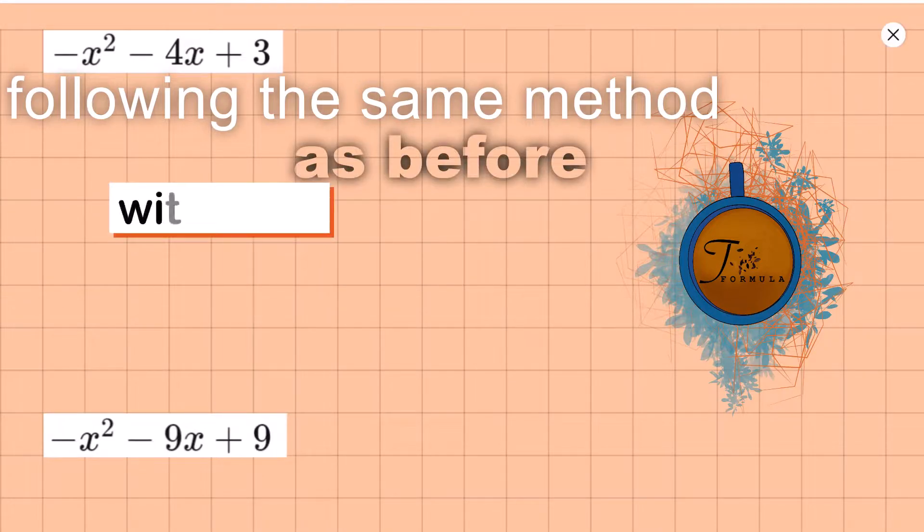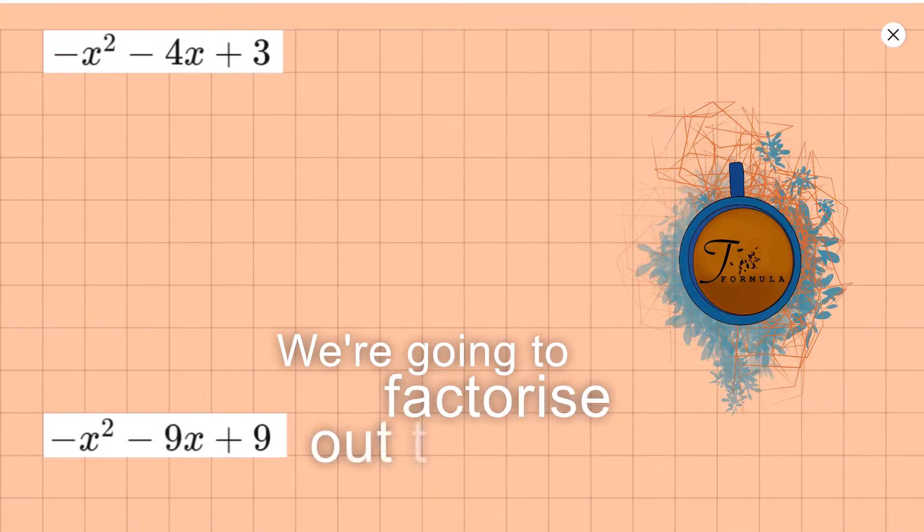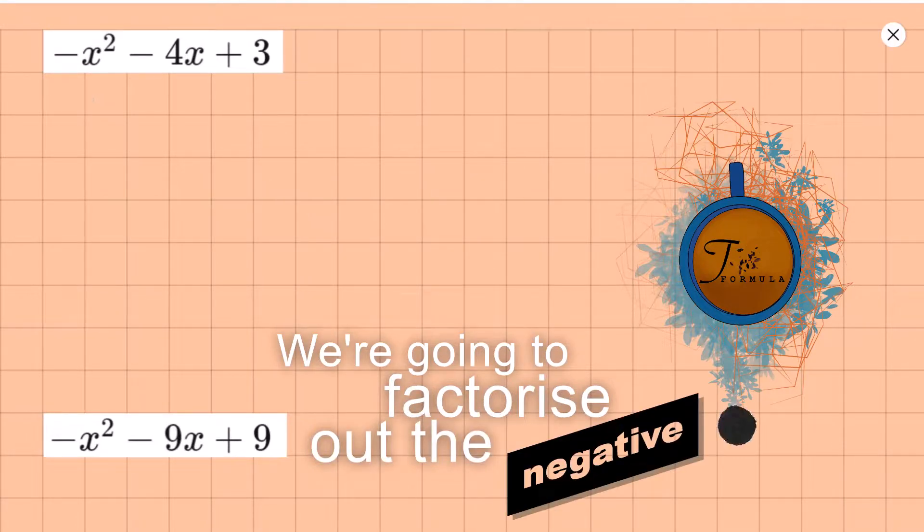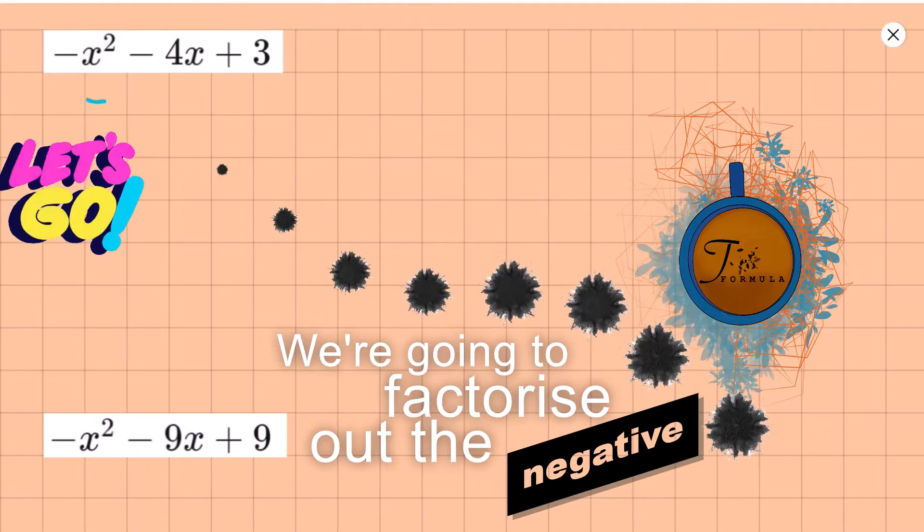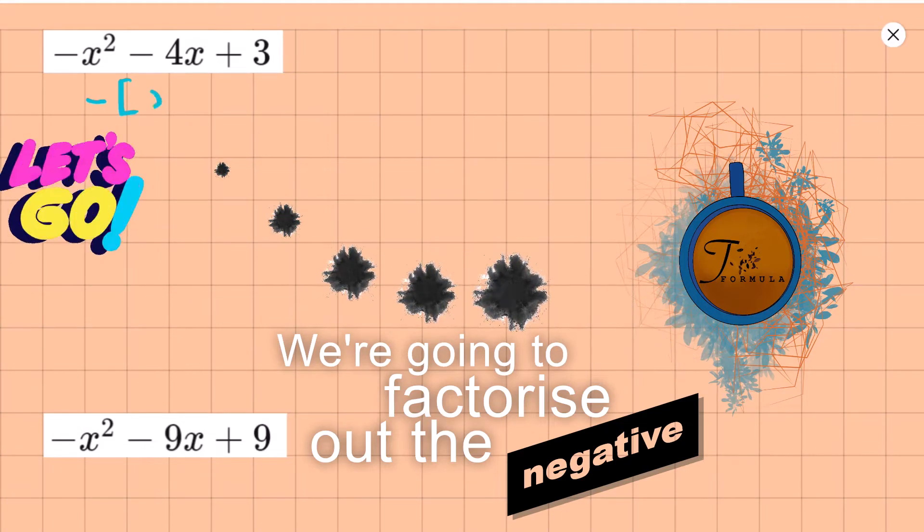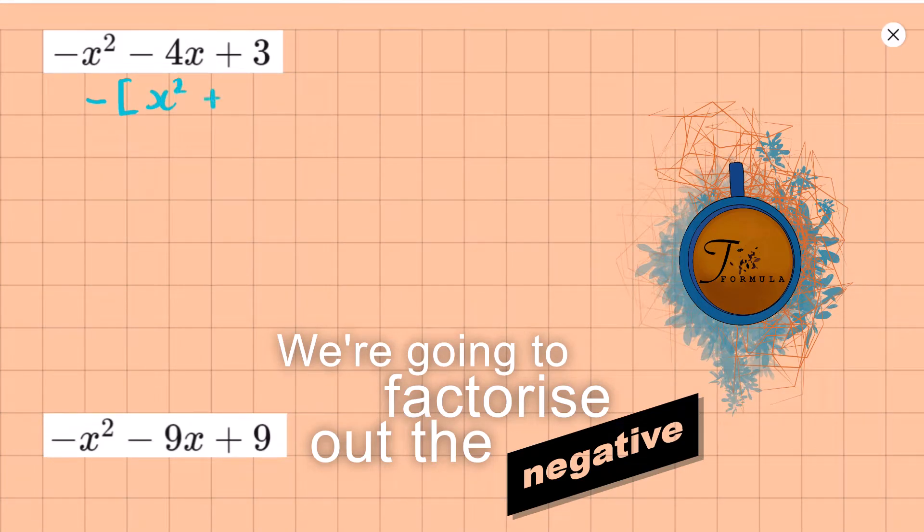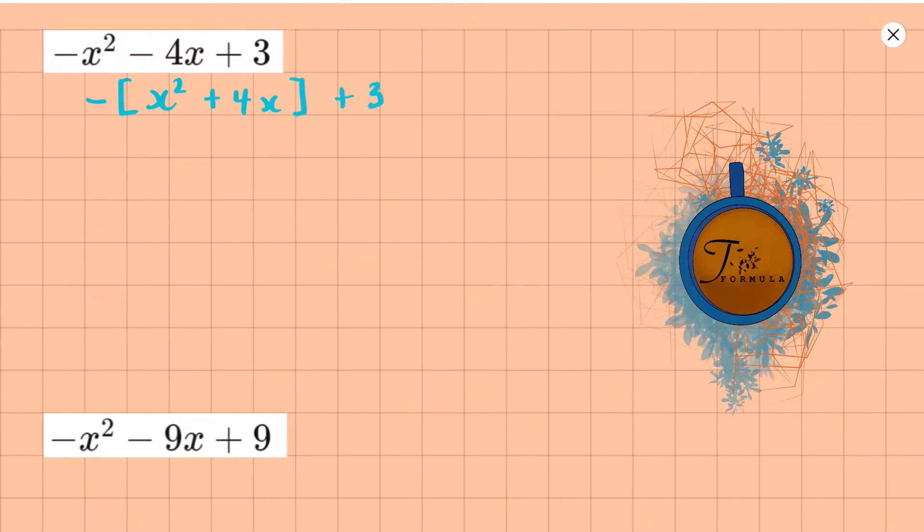Following the same method as before with the a is more than one, we're going to factorize out the negative. So let's take that out the front. In square brackets, what we're left with is something lovely on the inside.